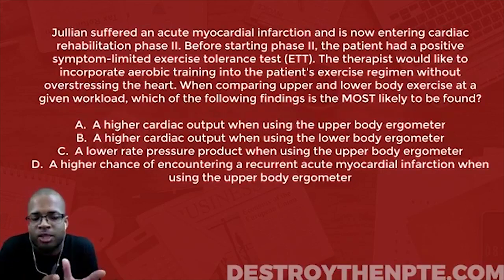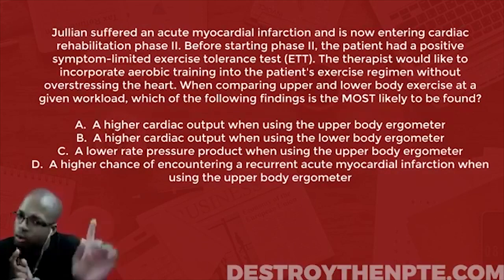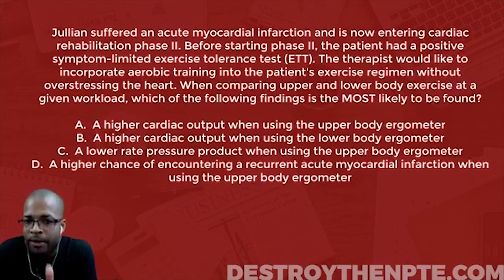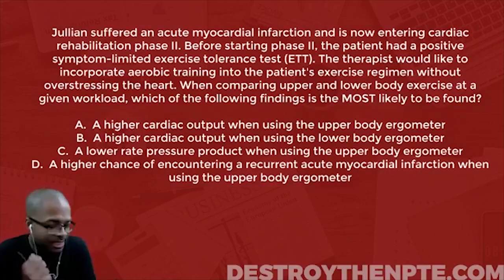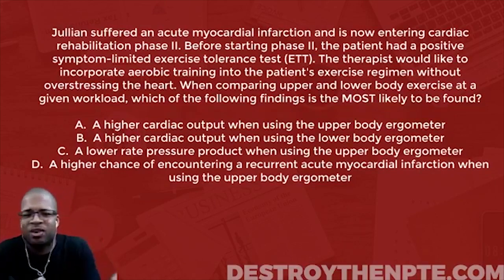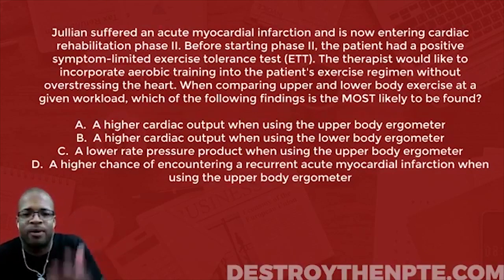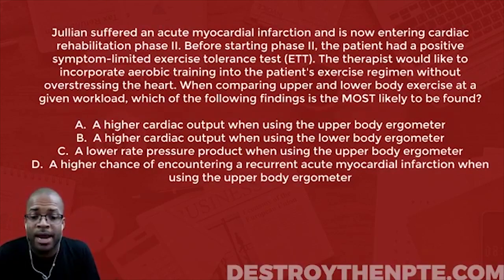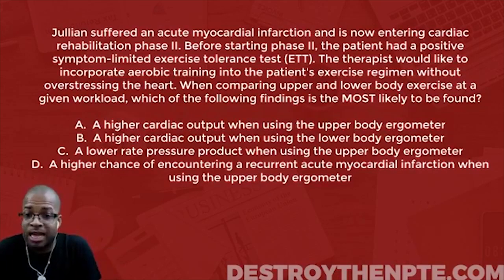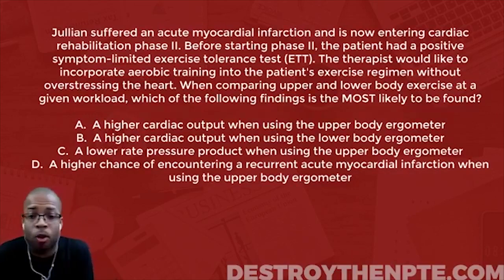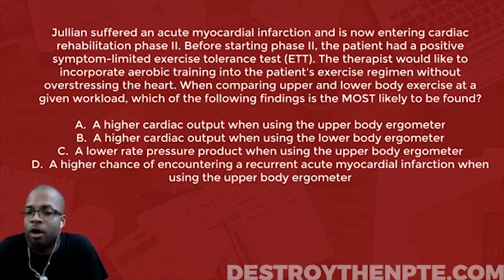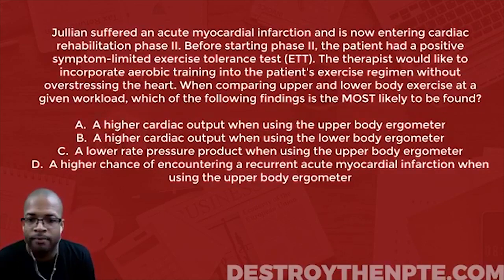Let me make this a little clearer. When comparing upper body and lower body exercise at a given workload, that's like doing an upper body bike — the UBE — at resistance level five, and then having the patient do lower body exercise also at resistance level five. You're doing the same workload for upper and lower body, and we're trying to determine which one is going to have the most stress on the heart.